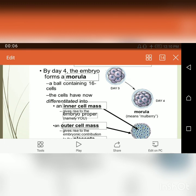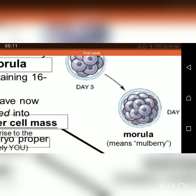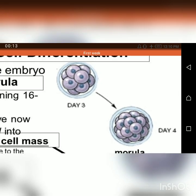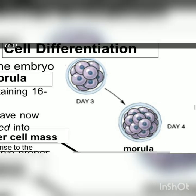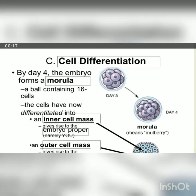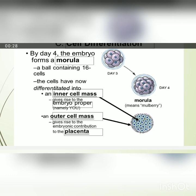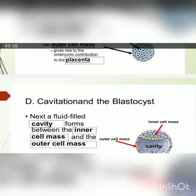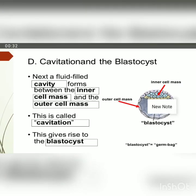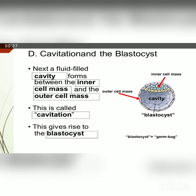Uterine fluid passes through the zona pellucida — the outer covering of the zygote, which is a very protective layer surrounding it. As uterine fluid passes through the zona pellucida, it forms a blastocyst cavity, and the developing human is now called the blastocyst.